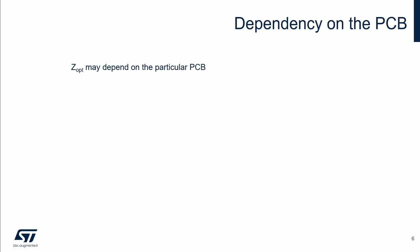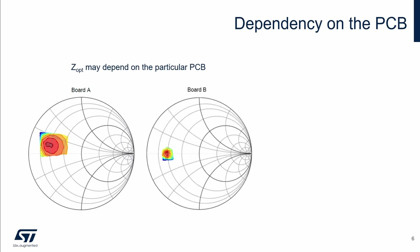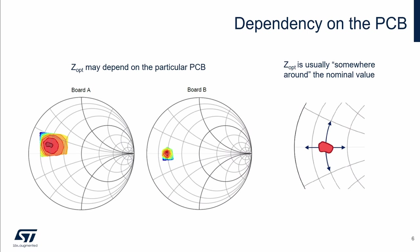Optimal load impedance may depend also on the PCB, for example. On one board the graph may look like this, and on other board like this. The actual optimum load impedance on a particular board may usually be somewhere around the nominal value as specified in the application note.